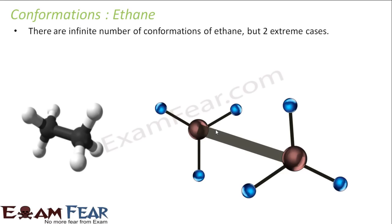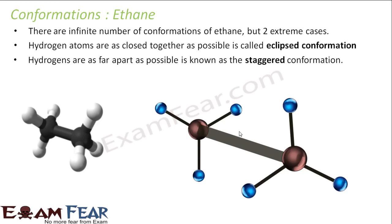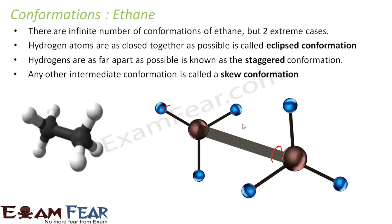There are infinite conformations, but we are interested in two extreme cases. One is where the hydrogen atoms are as close together as possible — this is the eclipsed conformation. The other is the staggered conformation, where the hydrogen atoms are as far apart as possible. All the intermediate conformations are called skew conformations. So we have three types: eclipsed (hydrogens very close), staggered (hydrogens very far apart), and skew (intermediate).